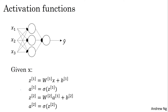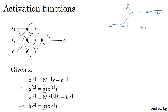In the forward propagation steps for the neural network, we had these two steps where we use the sigmoid function here. So that sigmoid is called an activation function. And here's the familiar sigmoid function: A equals 1 over 1 plus E to the negative Z. So in the more general case, we can have a different function G of Z, where G could be a nonlinear function that may not be the sigmoid function.